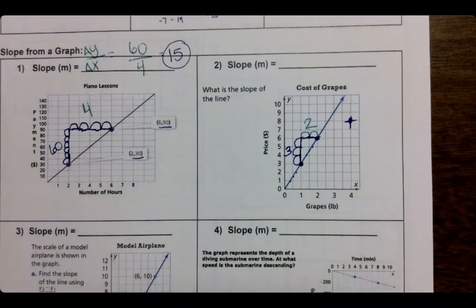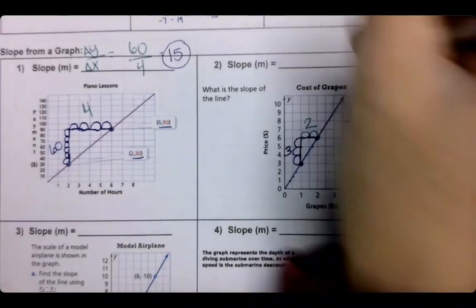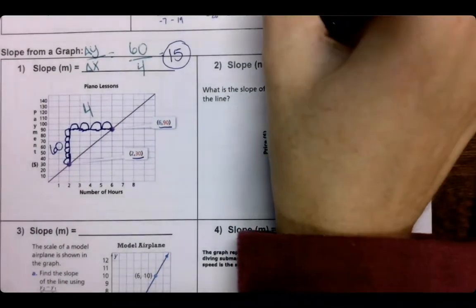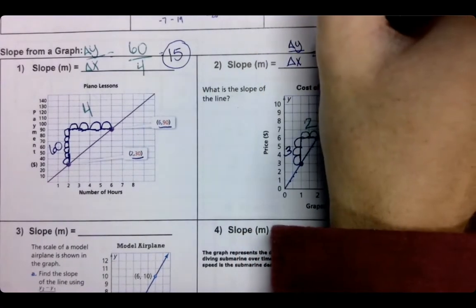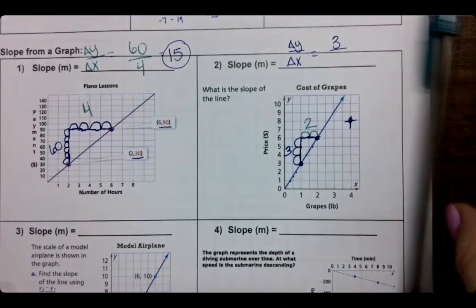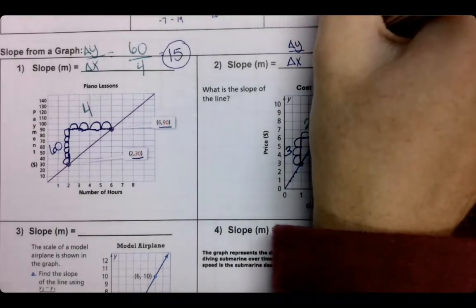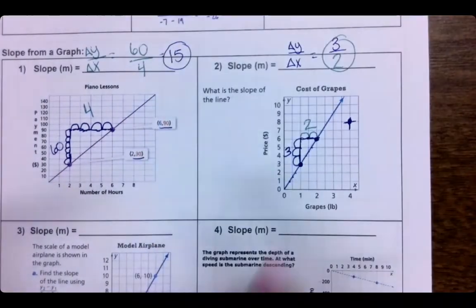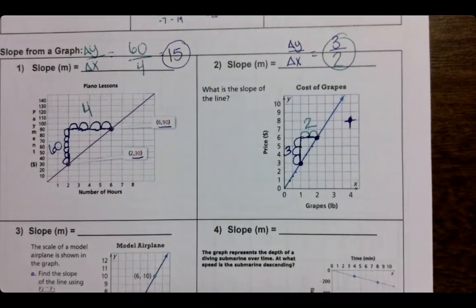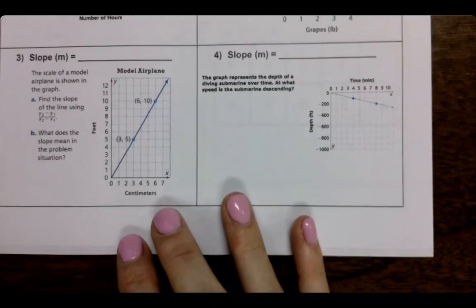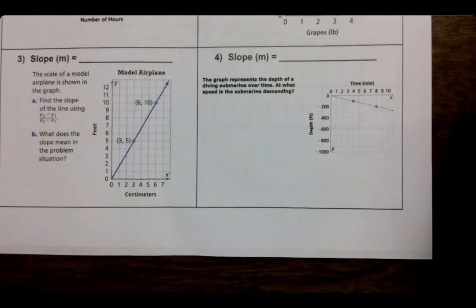And then from there, we would put y over x, which would be three over two. And as a whole, both these graphs go up. So they are a positive slope. I want you to try three and four using the same method and see how you do.